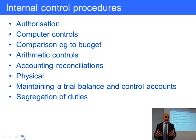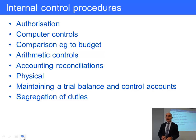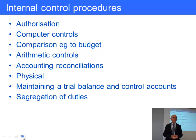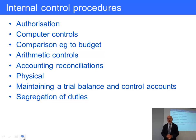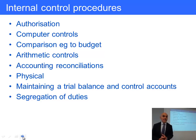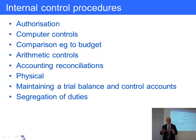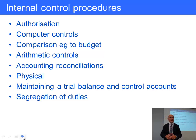First, authorisation — it is a fantastically important control. You can authorise nearly everything, although sometimes the cost of the control may outweigh the benefits. Typically you would authorise a purchase order, the purchase of new equipment or inventory, people's overtime, the hiring of new people, and maybe the credit limit for a new customer. Somebody in authority normally signs as authorisation, and auditors can check these documents for the right person's signature to verify the internal control system is working.